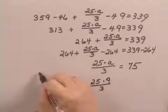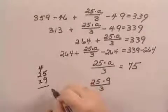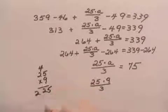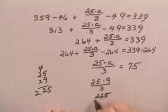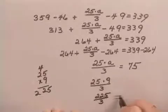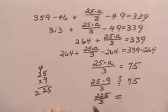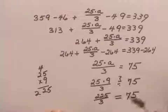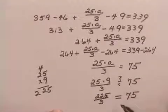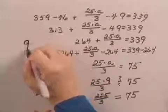Well, if I multiply 25 times 9, I get 225. 225 divided by 3 does equal... If I divide those out, that does equal 75. So by substituting in 9 for A, I made a true statement. So I can say that the value of A that makes that statement true is 9.